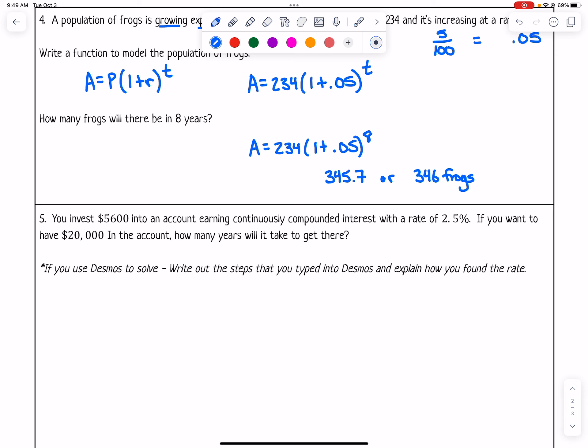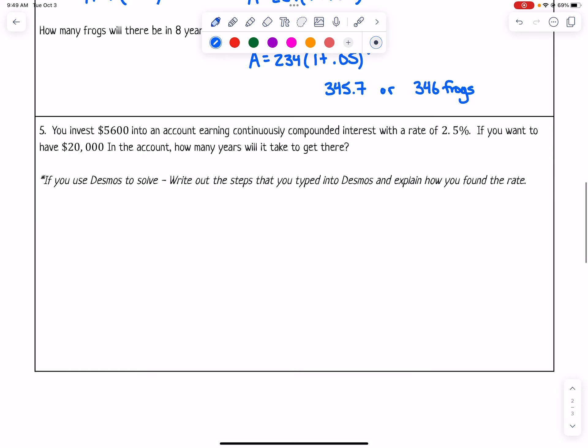For number 5, the last question on the practice quiz, it says you invest $5,600 into an account earning continuously compounded interest with a rate of 2.5%. If you want to have $20,000 in the account, how many years will it take you to get there? We're going to set up our continuously compounded interest formula, which is A = Pe^(rt).